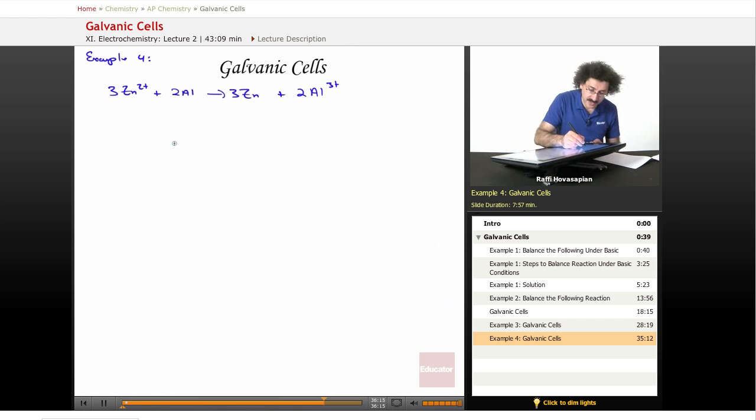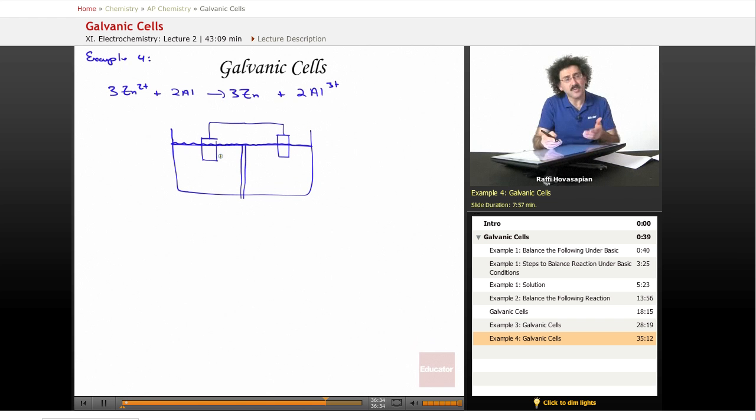So what this looks like is the following. This is the water level, by the way. For the time being, it doesn't matter where we put what. How about if I make this the aluminum metal and this the zinc metal? That means here I have zinc ion in solution and here I have aluminum ion in solution. I may not have any aluminum ion in there yet.